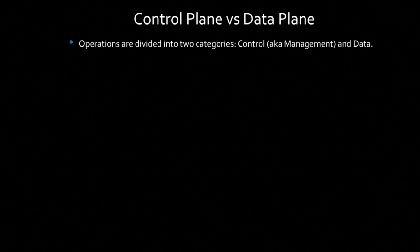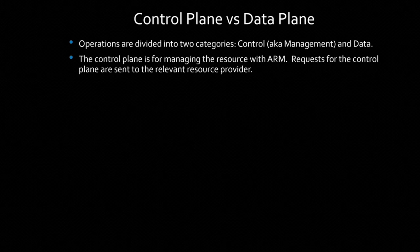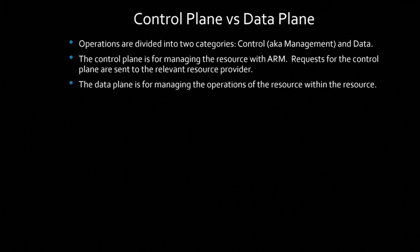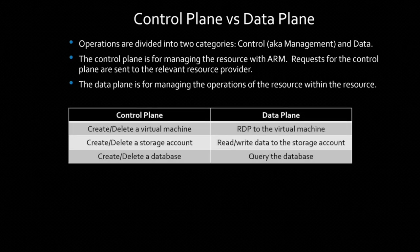Operations on ARM are divided into two categories: control plane (for managing resources) and data plane (for managing operations within the resource). The control plane request is sent to the relevant resource provider — for example, creating a new storage account goes to the storage account resource provider. The data plane is for managing operations within the resource — for example, reading a blob in a storage account. To create a virtual machine: control plane. To RDP to that VM: data plane. To create a storage account: control plane. To write to the storage account: data plane.